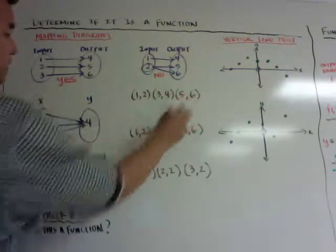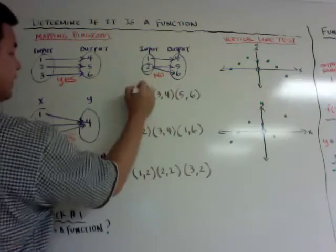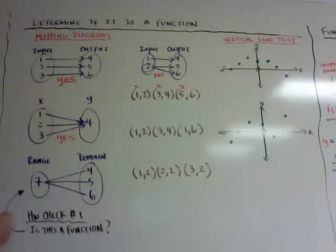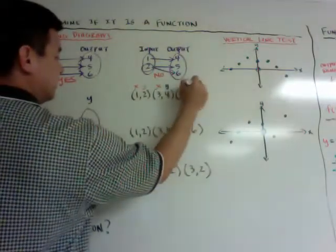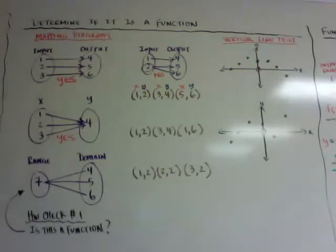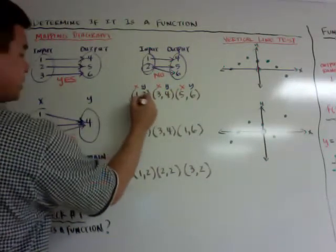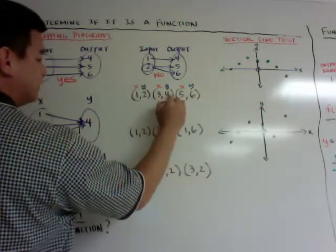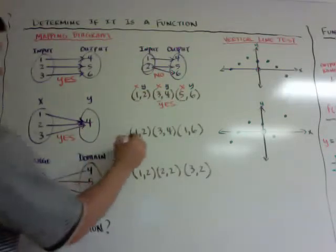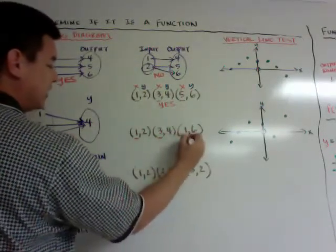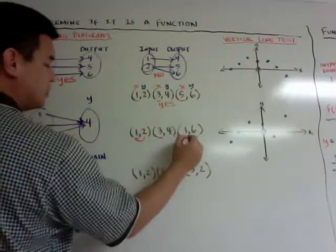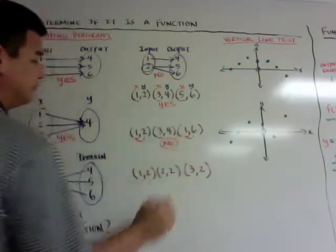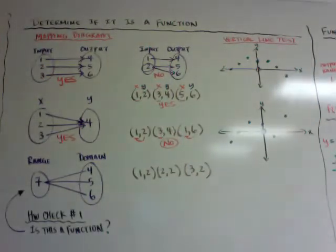Another way to determine a function is with coordinate pairs. Look at your x-coordinates — the first value in each pair. Does each x have exactly one y? In the first example, yes, so it is a function. In the second example, the x-value '1' appears with two different y-values — a 3 and another value — so it is not a function because one x has two different outputs.